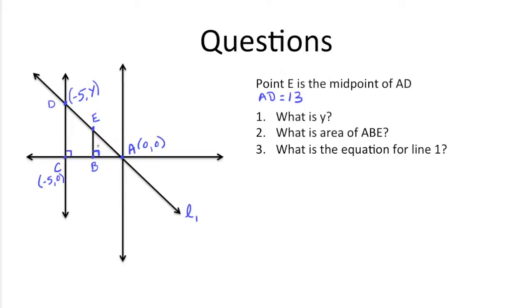Point E is the midpoint of AD here, and we know AD is also 13. We need to figure out what Y is here at point D. We need to figure out the area of this triangle here, ABE, and we also need to figure out the equation for this line here, line 1.